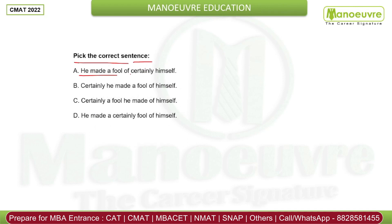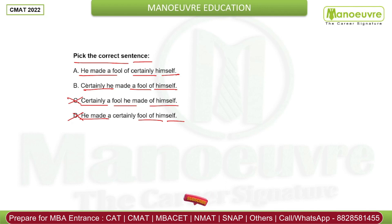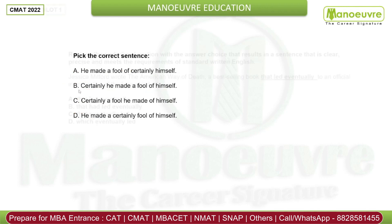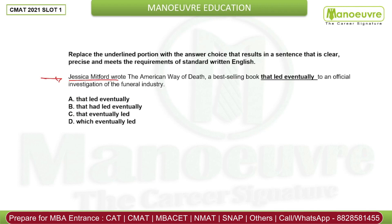Pick the correct sentence. 'He made a fool of certainly himself' — this is wrong. 'Certainly he made a fool of himself' — this is correct. 'Certainly a fool he made of himself' — this is illogical. 'He made a certainly fool of himself' — this is also wrong. 'Certainly' placed before 'he made a fool of himself' is correct. So B is your right answer.